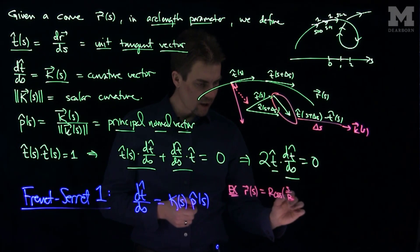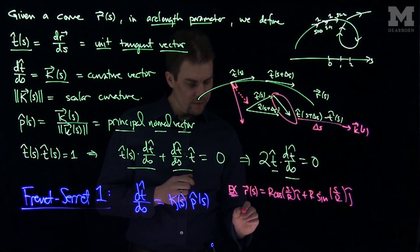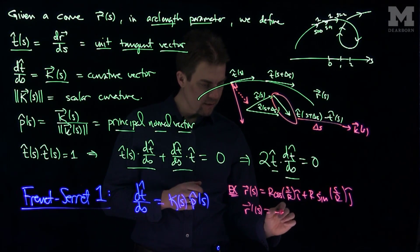If r of s is r cosine of s over r i hat plus r sine of s over r j hat, you can check that this curve is a unit speed curve, and the second derivative of this curve, so r prime of s...